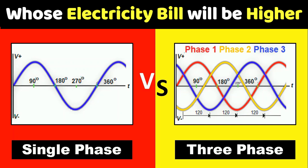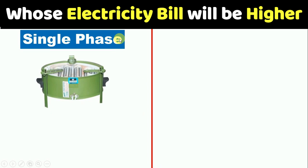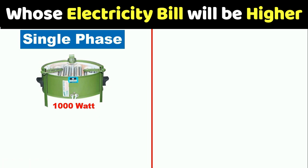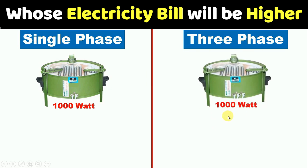Today through this video we are going to learn: if we have equipment which runs on single phase and another equipment which runs on three phase power supply, then among these two whose electricity bill is going to be more? For example, suppose we have a heater which runs on single phase with a rating of 1000 watt, that is one kilowatt. Similarly, we have a heater which works on three phase and it is also one kilowatt. Both heaters are of the same rating — the only difference is one operates on single phase and the other on three phase. So we have to find out among these two whose electricity bill will be higher.